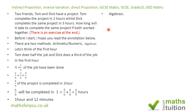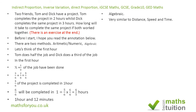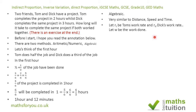For the algebraic method, we look at distance, speed, and time — very similar indeed. We let r-sub-t be Tom's work rate (equivalent to speed) and r-sub-d be Dick's work rate. The work done W is equivalent to distance, and speed times time gives distance, so r-sub-t times time gives work done.